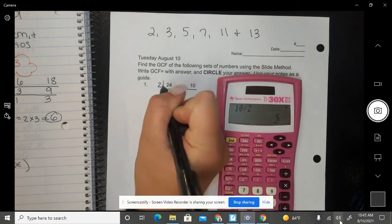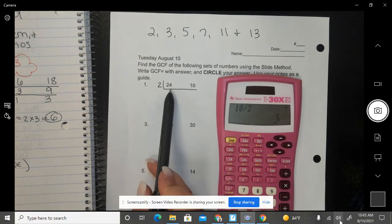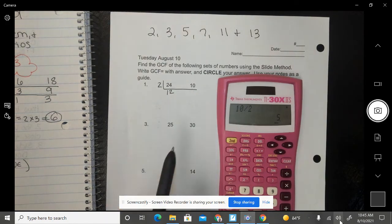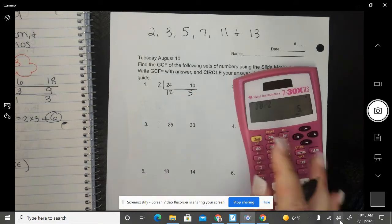So I can use 2. So then my third step is to divide. So I'm going to go 24 divided by 2 is 12. 10 divided by 2 is 5.